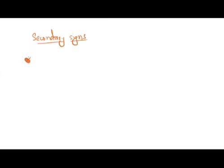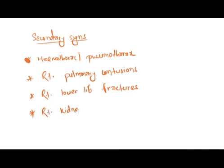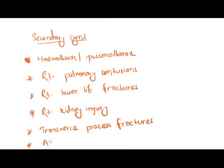In liver injury there are secondary signs — signs found outside of the liver. These include hemothorax or pneumothorax, right pulmonary contusions, right lower rib fractures, right kidney injury, transverse process fracture, adrenal hemorrhage, and retroperitoneal hemorrhage. These secondary signs help in the diagnosis of liver trauma.